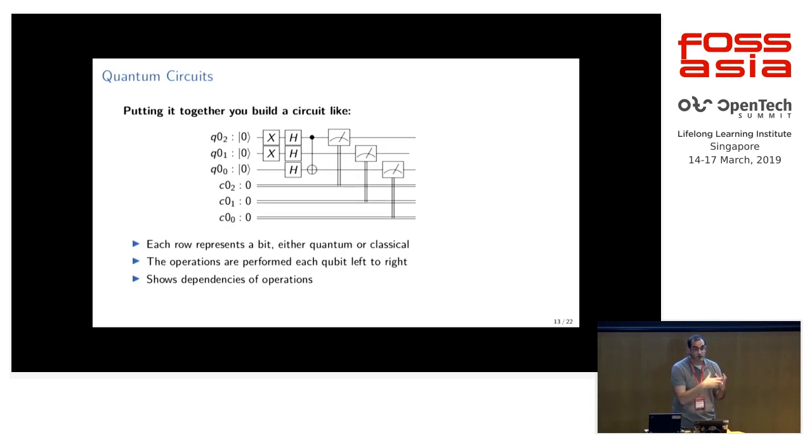You can put this all together to build quantum circuits, which you can also think about like quantum programs. It's just a way of representing the series of operations and the dependencies between them over multiple qubits. In this example, we apply two X gates to the first two qubits. We apply Hadamards to all of them. And then we have that one CNOT between qubit two and qubit zero. And then those are measurements. You measure from a quantum bit to a classical bit, and then you'll get a zero or a one on the output.